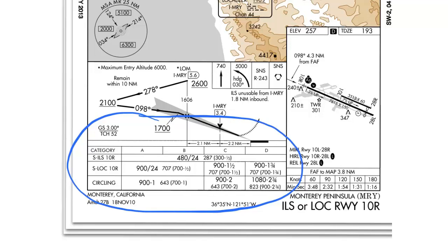First, you have the category, which indicates what approach speed your aircraft is going to be flying. Category A is for small, slower aircraft flying approaches under 90 knots. As your approach speed increases, so does the category. Category D aircraft are normally high-performance jet aircraft with the fastest approach speeds.